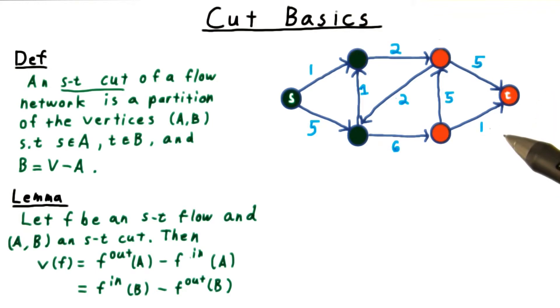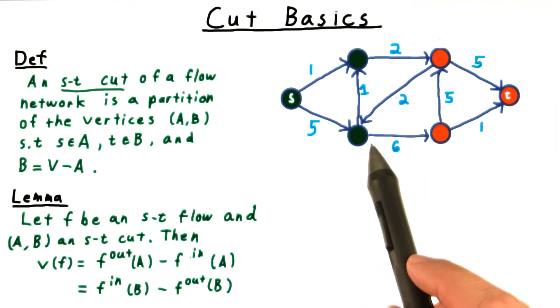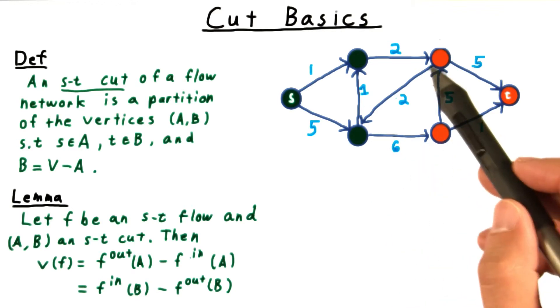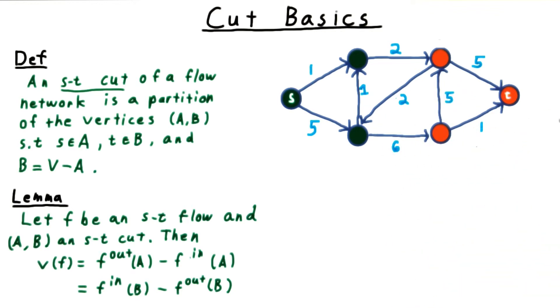And similarly for this cut here, we have 2 exiting here, and 2 exiting here, and 2 entering here, again for a total of 6.